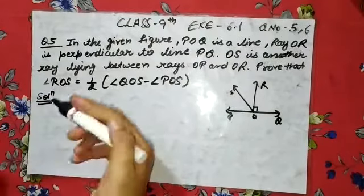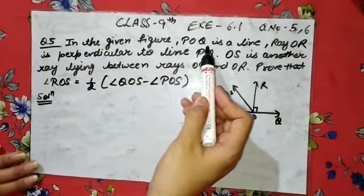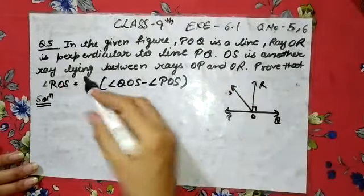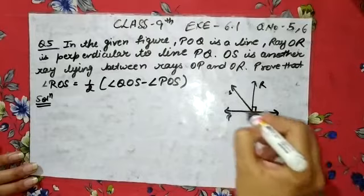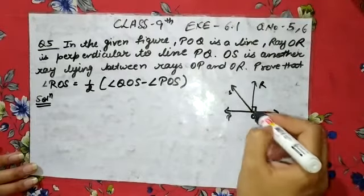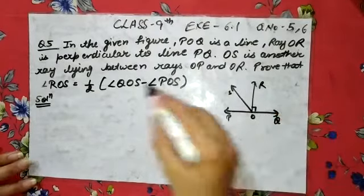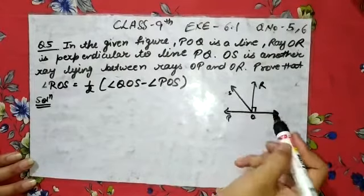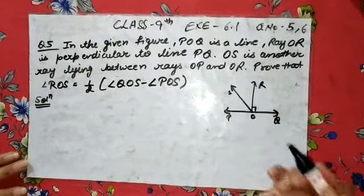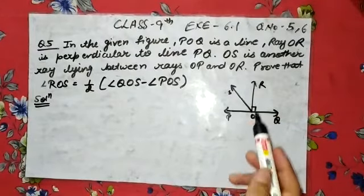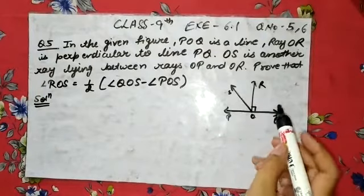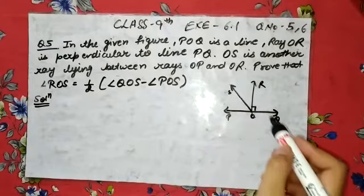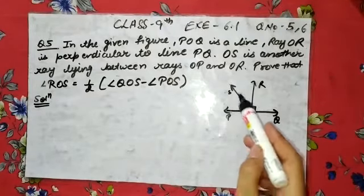Understand the statement carefully. In the given figure, POQ is a line, and ray OR is perpendicular to line PQ. OS is another ray lying between OP and OR. Prove that angle ROS is half of angle QOS minus angle POS.